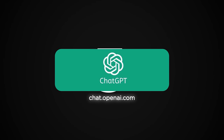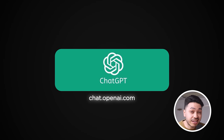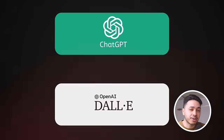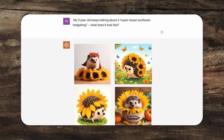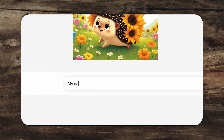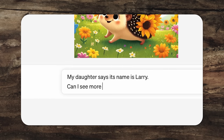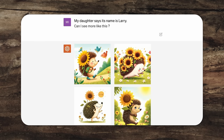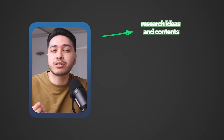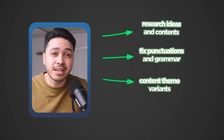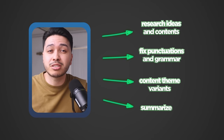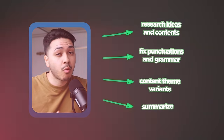ChatGPT is still the best, especially with some of the updates they have now. One thing I'm really excited about is the DALL-E 3 integration — I can chat with it to generate images and continue to modify them right in the chat. DALL-E 3 has some of the best image generation available, and you can actually put text on images. I use ChatGPT to research ideas, fix punctuation in my scripts, change the whole tone of my scripts, and even summarize them for YouTube descriptions with specific keywords.